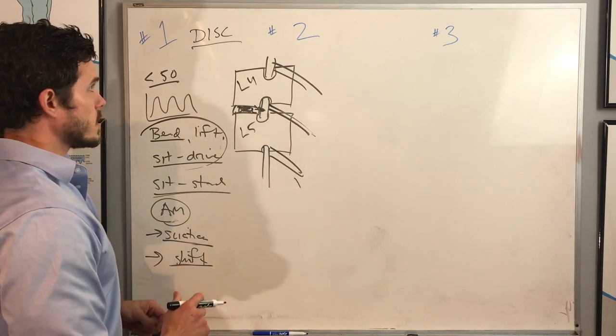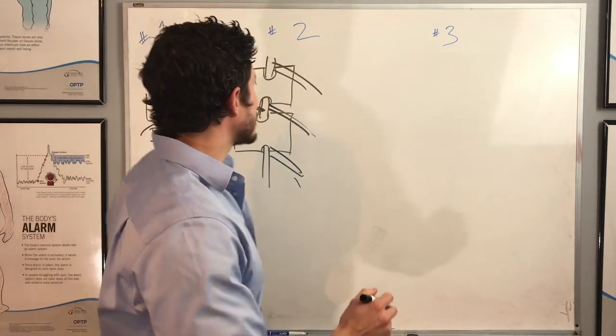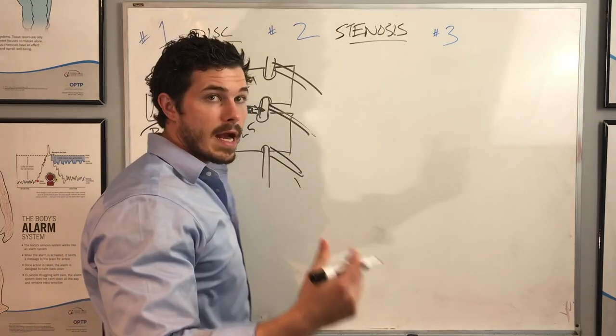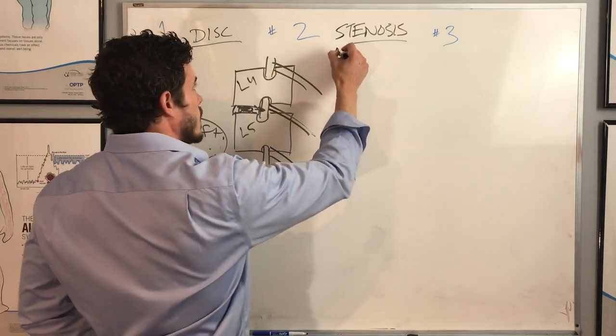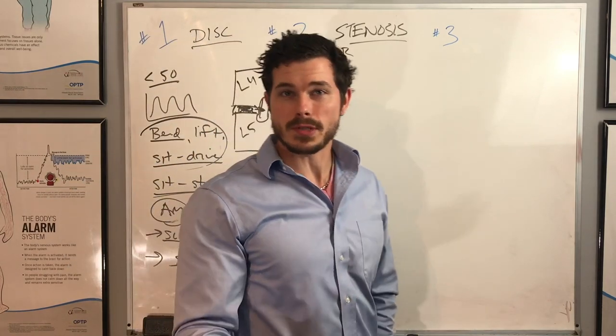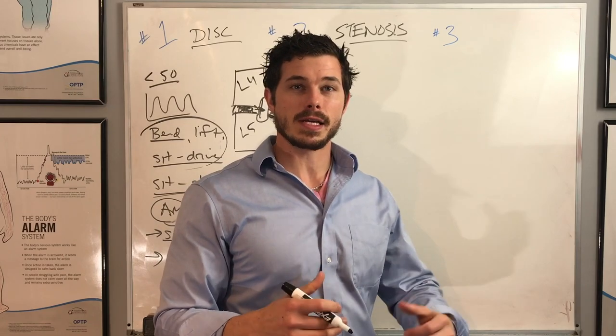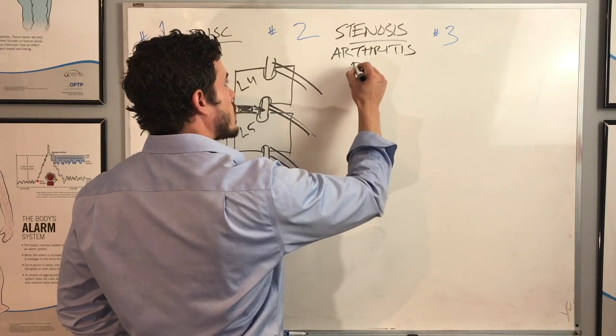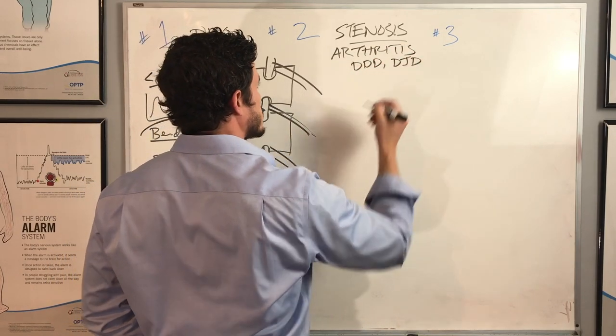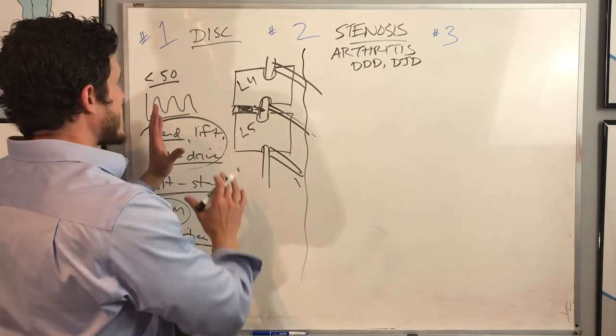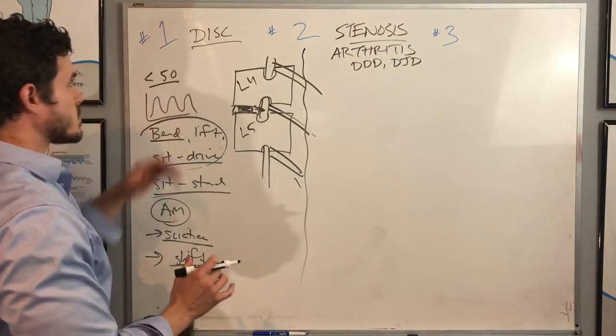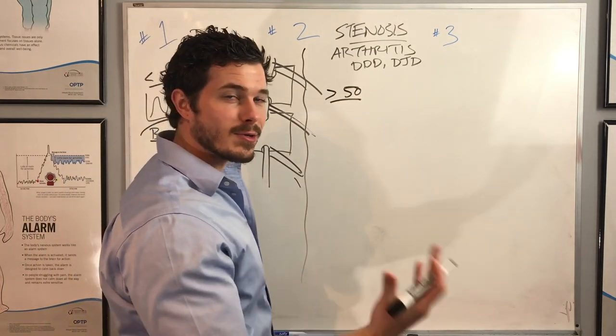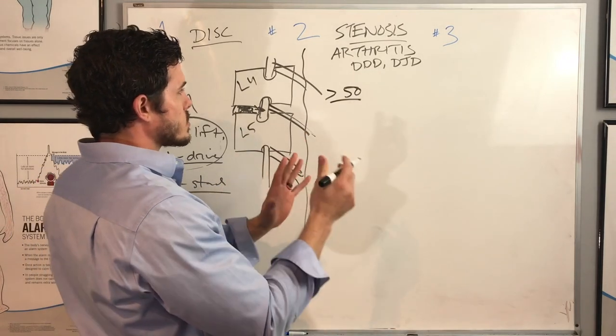Now, the number two cause, or the second most common cause of back pain and sciatica, is going to be spinal stenosis, which is literally just a fancy term that means narrowing of the spaces in the spine where the nerves travel. Who knows Arthur? Maybe you've met Arthur and you're well aware that his last name is arthritis. So arthritis, degenerative disc disease, or degenerative joint disease. And what we see here is that these people are almost exactly the opposite of people who have disc problems. So these people are generally more mature. They're wiser, a little bit older, so greater than 50 years old when their back starts to bother them.